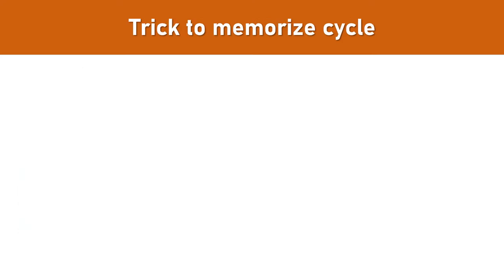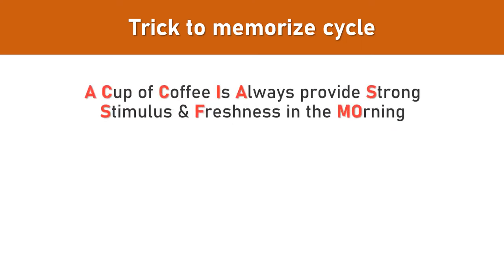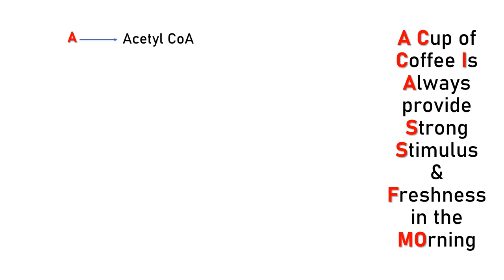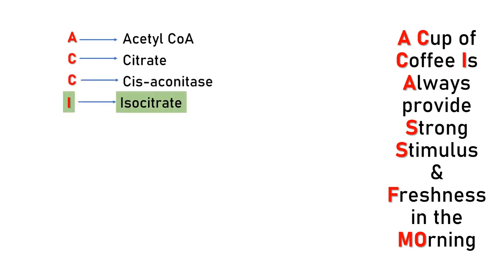Here is a trick to recognize and remember all the intermediates of the TCA cycle. All of us know that in the morning a cup of tea or coffee stimulates us and gives us energy — and I have used that same idea to memorize the TCA cycle. The trick is: 'A cup of coffee is always provides strong stimulus and freshness in the morning.' A is for acetyl-coenzyme A, C for citrate, another C for cis-aconitase.